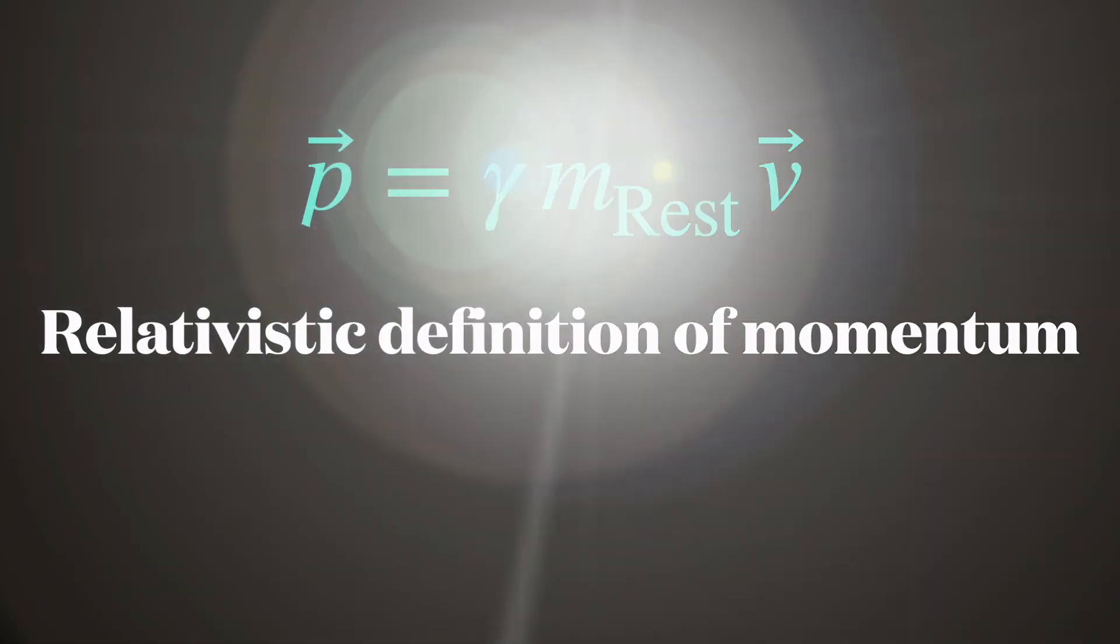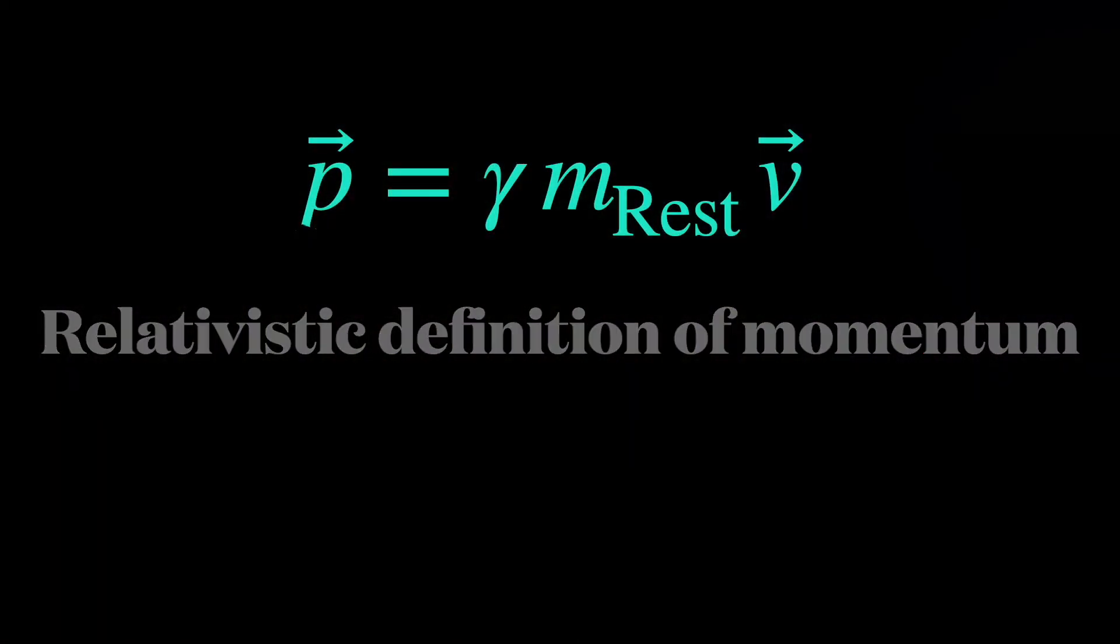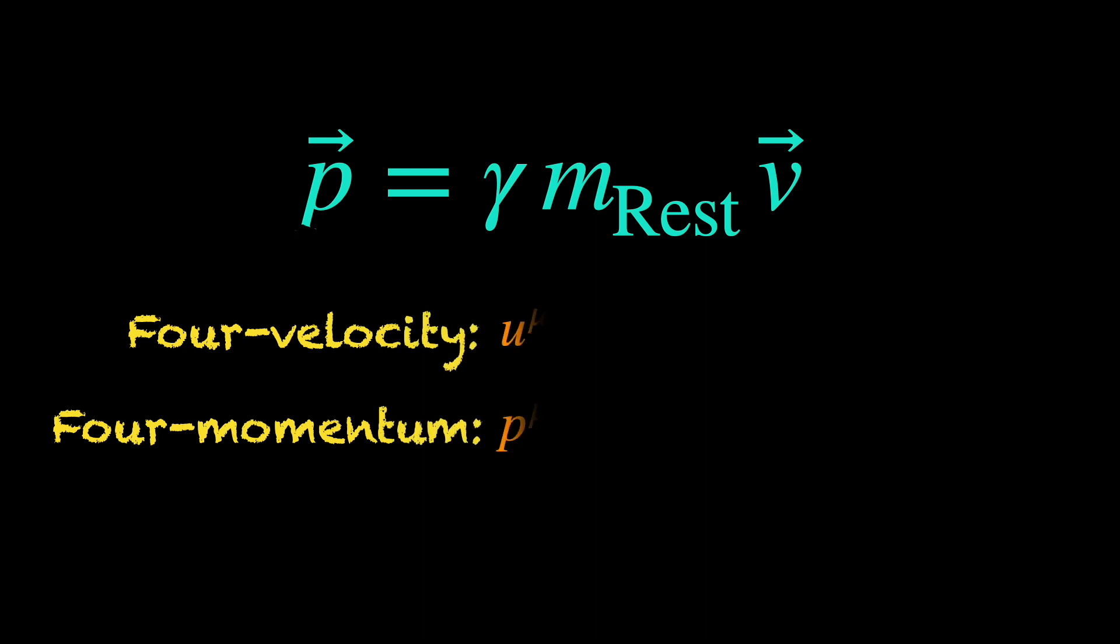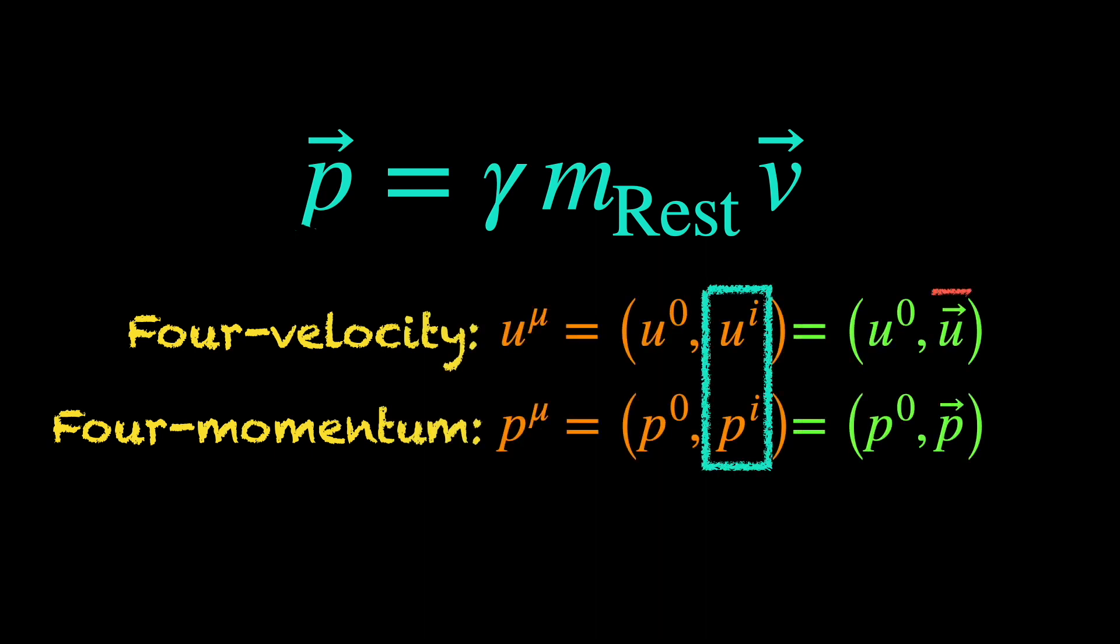Where do we get this relativistic definition of momentum vector? From 4-velocity and 4-momentum, specifically their spatial components, i.e. their 3-dimensional vector parts.